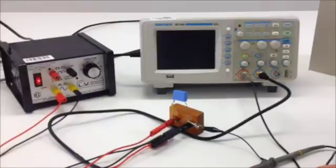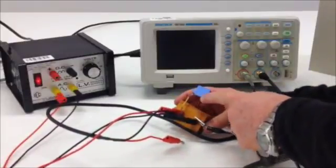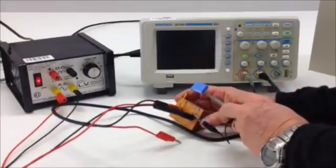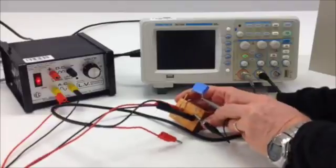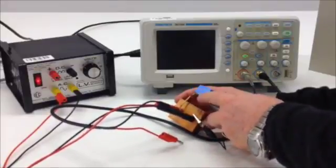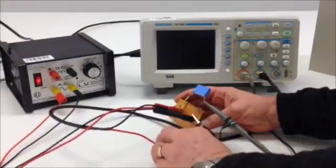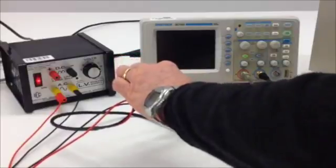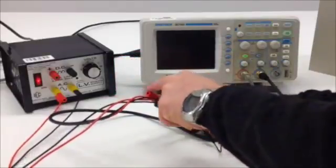And then it says connect channel one input to point B. And point B is the point between the resistor and the capacitor, which is why I suggested if you've got something with an alligator clip or a hook on the end, plug it into channel one so we can just put the hook there on that point. So now that will monitor the voltage between the resistor and the capacitor. And then the other channel of the oscilloscope simply needs to connect to point C, which is where the capacitor connects back to the power supply.